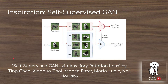The inspiration is self-supervised GAN, a paper that stabilized the training of generative adversarial networks by taking images and rotating them 90 degrees, 180, or 270 degrees, or not at all, and then having the discriminator predict the rotation — how much the image was rotated.